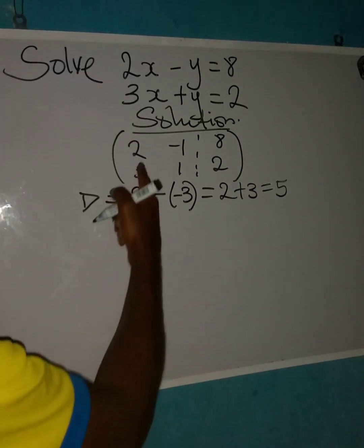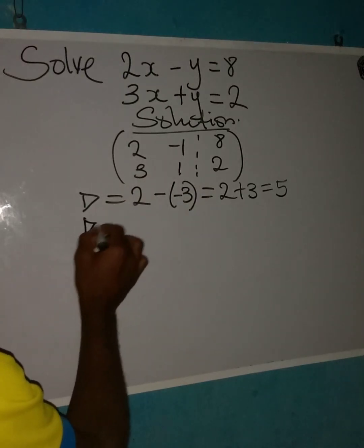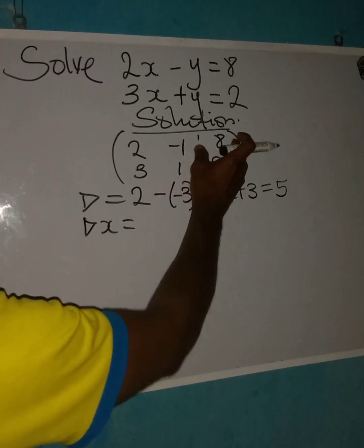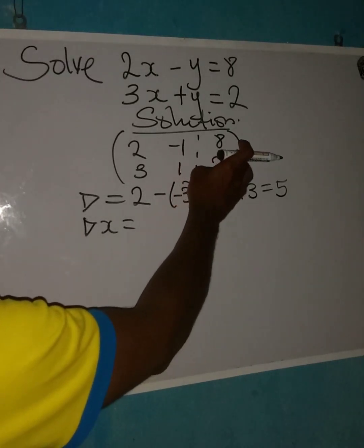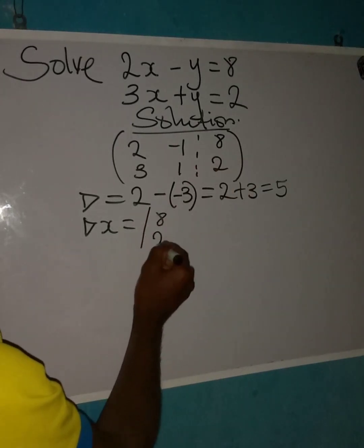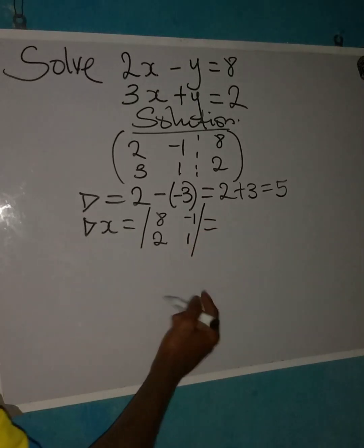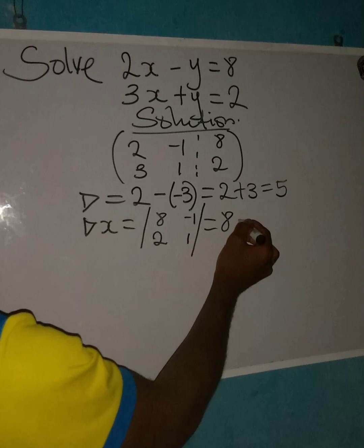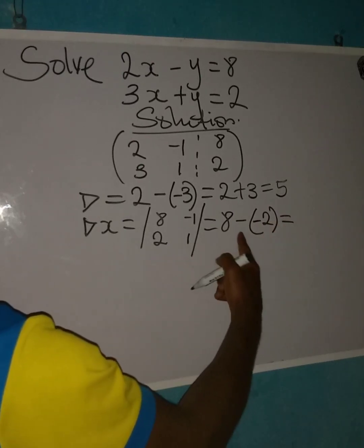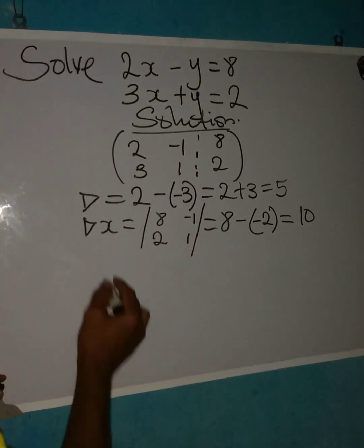Next, we find the determinant DX. When considering DX, the X column is excluded. So we consider 8 and 2 in place of the X column, with minus 1 and 1 remaining. This determinant is 8 times 1, which is 8, then minus 2 times minus 1, which gives plus 2. So DX equals 8 plus 2, which is 10.